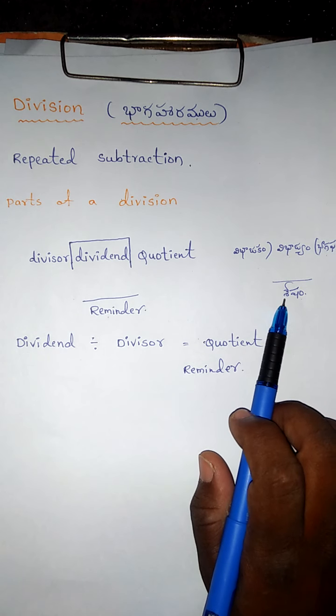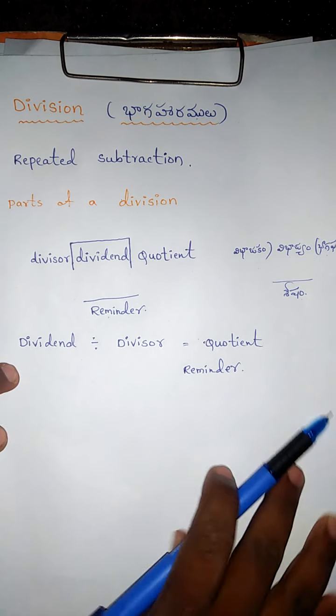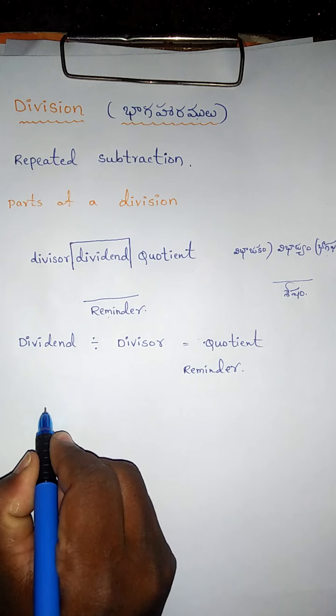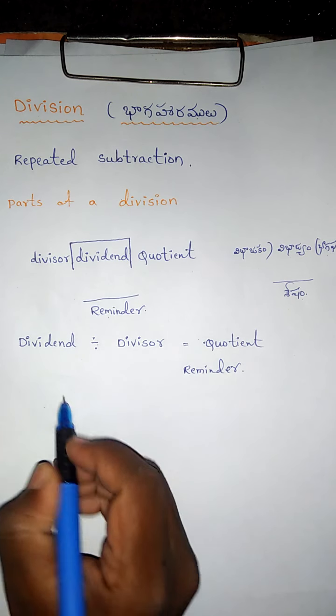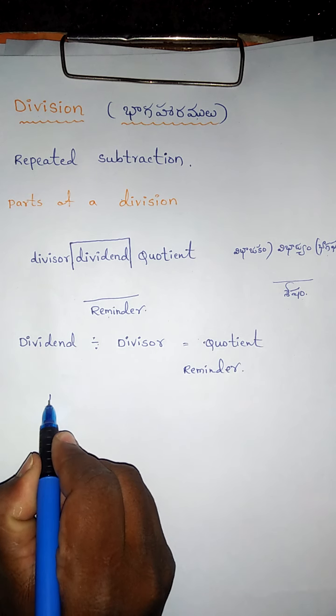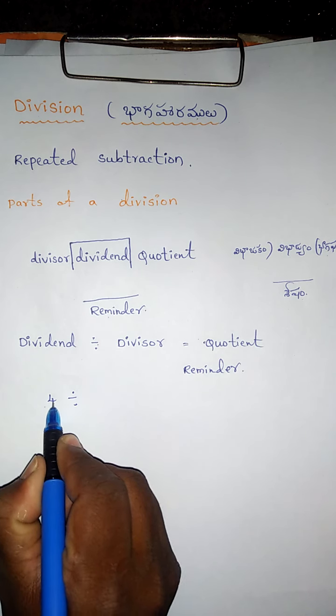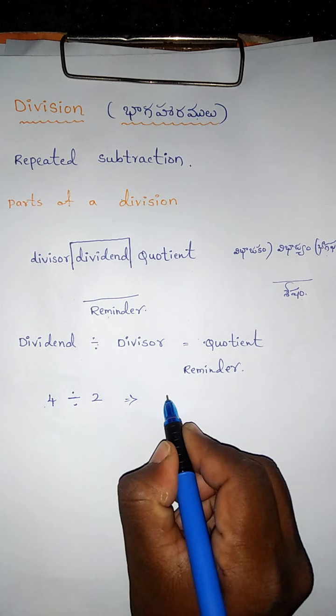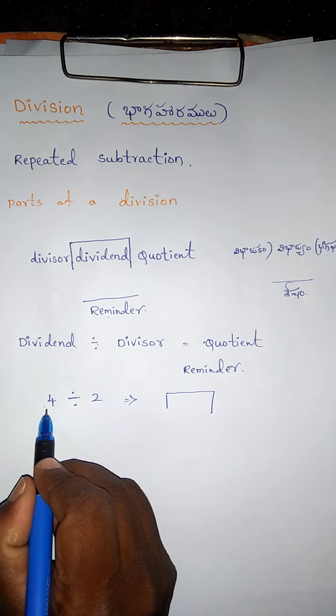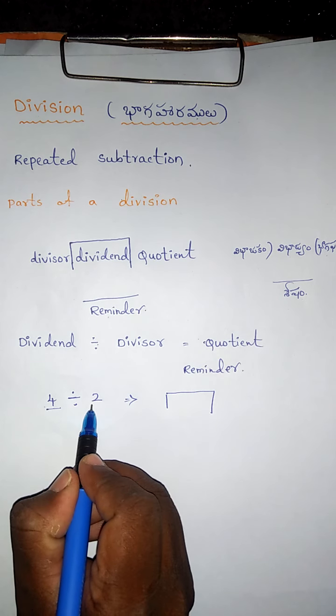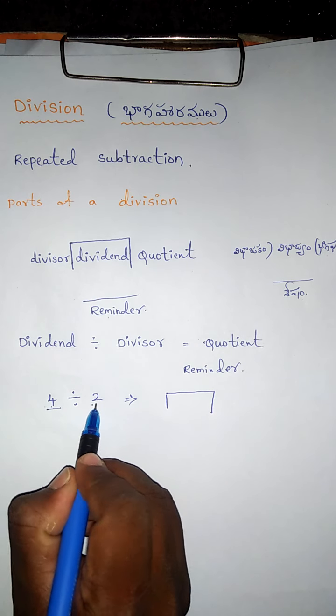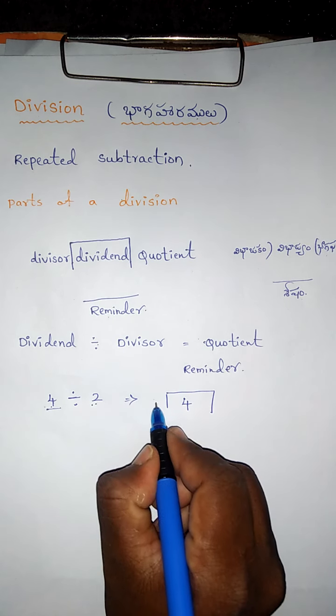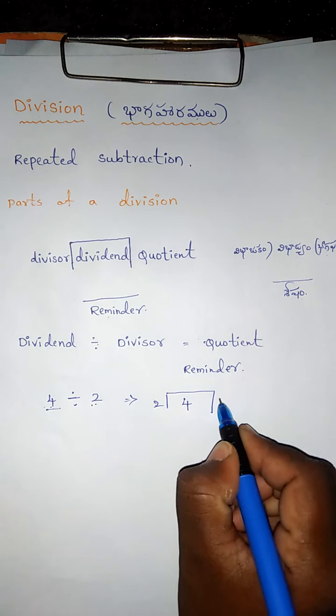The format of division: dividend divided by divisor. The first number is called the dividend. Dividend divided by divisor equals quotient. You have to write the dividend in the middle and the divisor here.